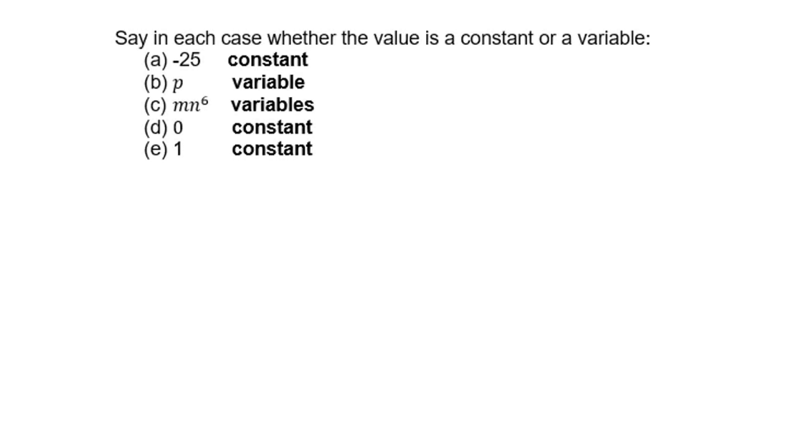In each case whether the value is a constant or a variable: -25 is a constant, P is a variable, m to the power 6 is a variable, 0 is a constant, 1 is a constant.